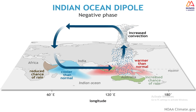Coming to the negative IOD phase — here you replace the warm water with cold on the western side and cold water with warm on the eastern side. Due to the weakening of trade winds, water moves from the western side of the Indian Ocean towards the eastern side, resulting in accumulation of warm water in the Indonesian coastal region. This results in low pressure accumulation there, causing air to expand and rise with moisture, leading to condensation and precipitation as rainfall.